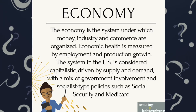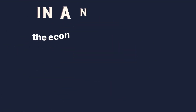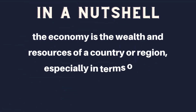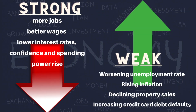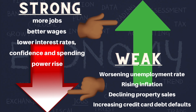Sometimes the word economy gets interchanged with the stock market, but they are separate. The economy is the system under which money, industry, and commerce are organized. Economic health is measured by employment and production growth. The system in the U.S. is considered capitalistic, driven by supply and demand, with a mix of government involvement and socialist-type policies such as Social Security and Medicare. In a nutshell, the economy is the wealth and resources of a country or region, especially in terms of consumption of goods and services. Indicators of a strong economy are more jobs, higher wages, low interest rates, and rising confidence in spending power. Indicators of a weak economy include worsening unemployment rates, rising inflation, declining property sales, and an increase in credit card and debt defaults.